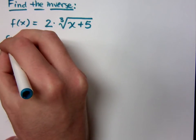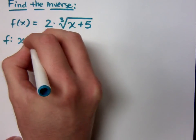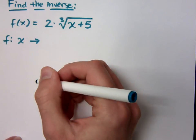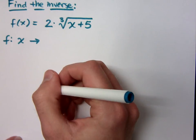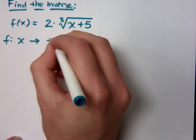So if I look at my function f, and I start with x, what's the first thing that I'm doing with my x, with my input value? Add 5. I add 5, and then what do I do?